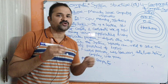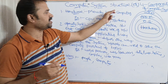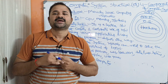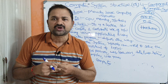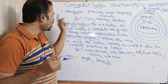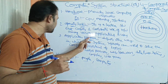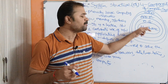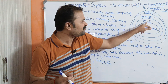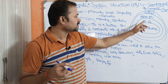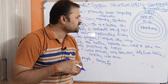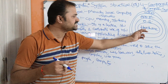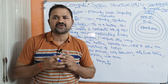Let us discuss about computer system structure, or the four components of a computer system. Any computer system mainly contains four components: hardware, operating system, application program, and users. In the diagram, the innermost component is hardware, on top of which we have the operating system, then the application program, and the outermost component is users.